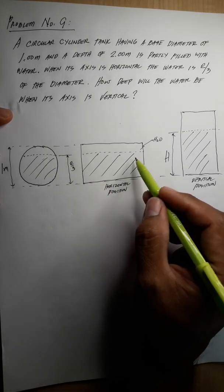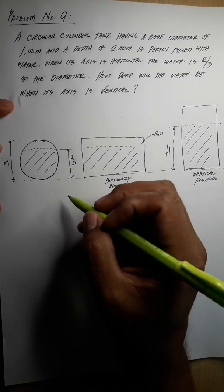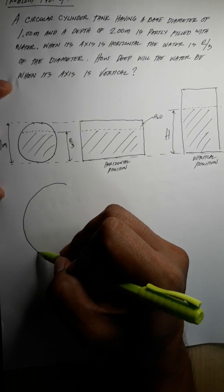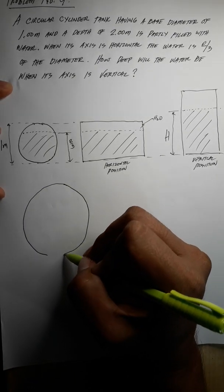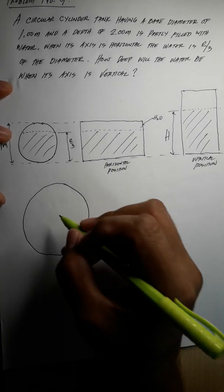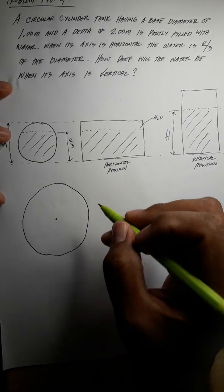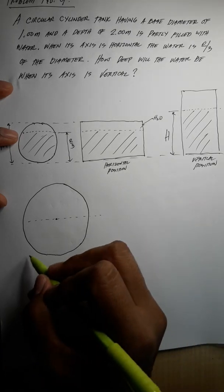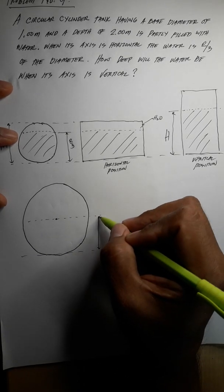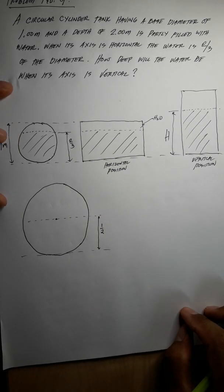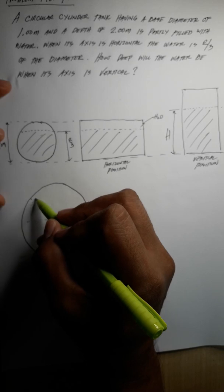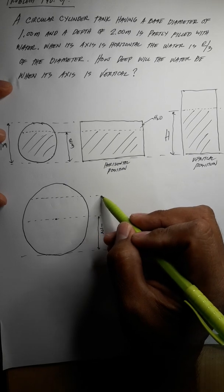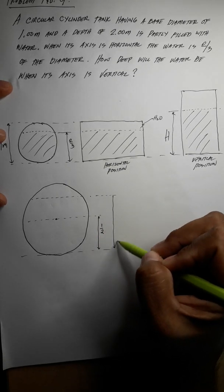So we enlarge the circular base of the cylinder to make it big. We know here is the center, and the radius is one-half. The water level is somewhere here at two-thirds — it's greater than one-half of course. So this is the water level at two-thirds.